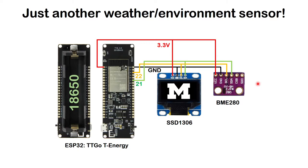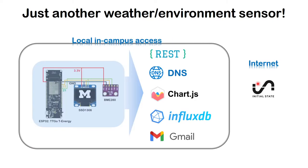With less than 20 dollars we have a working sensor. In terms of the Arduino code, it exposes a REST API that gives out the latest value from the sensor. It also connects to DNS so I can access it on campus. For in-browser rendering, Chart.js is pretty amazing.